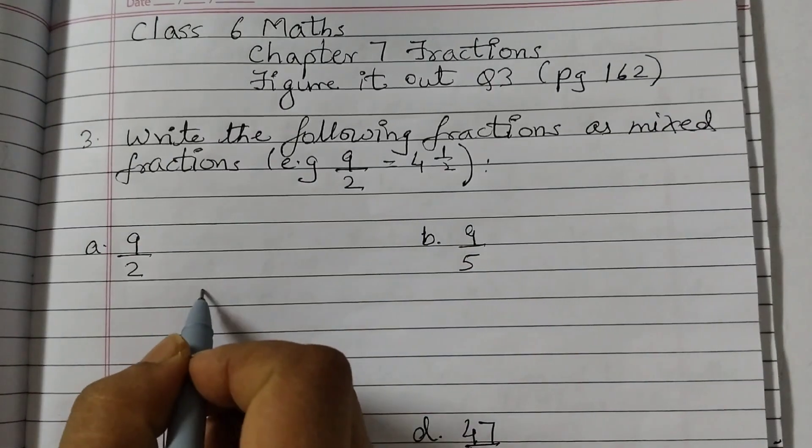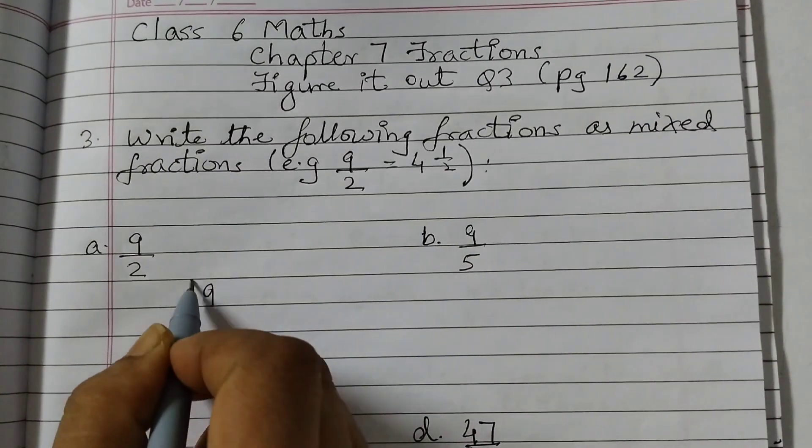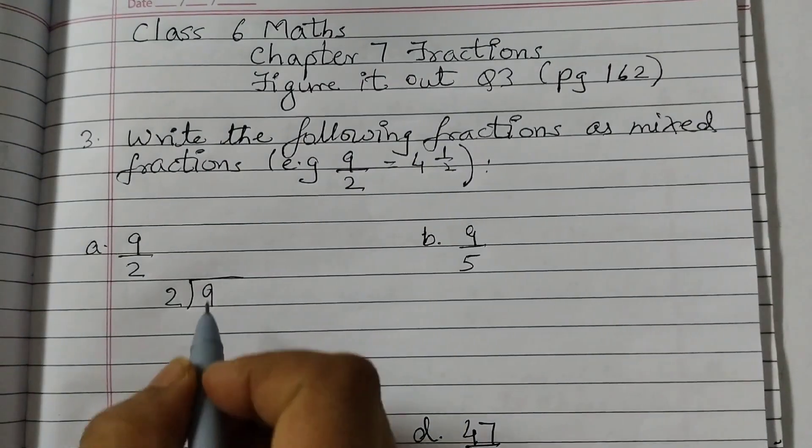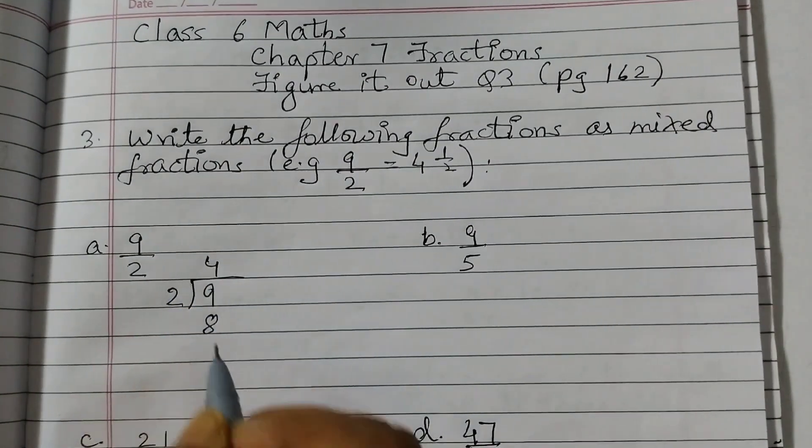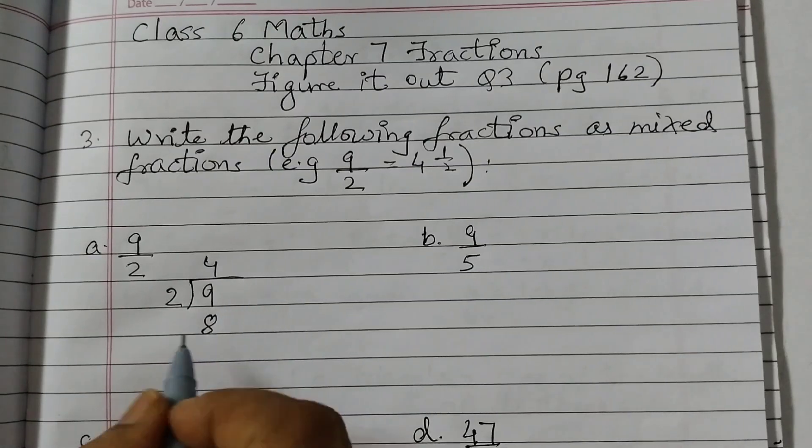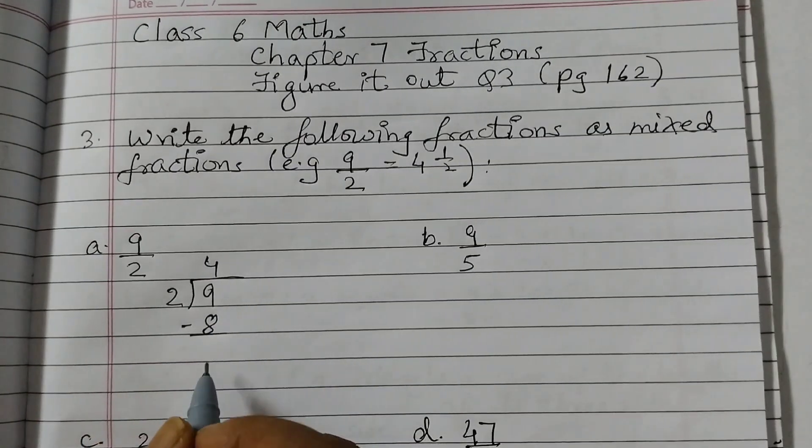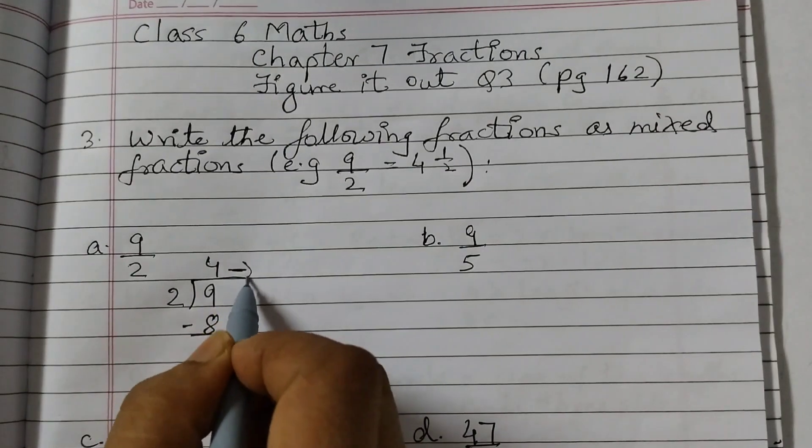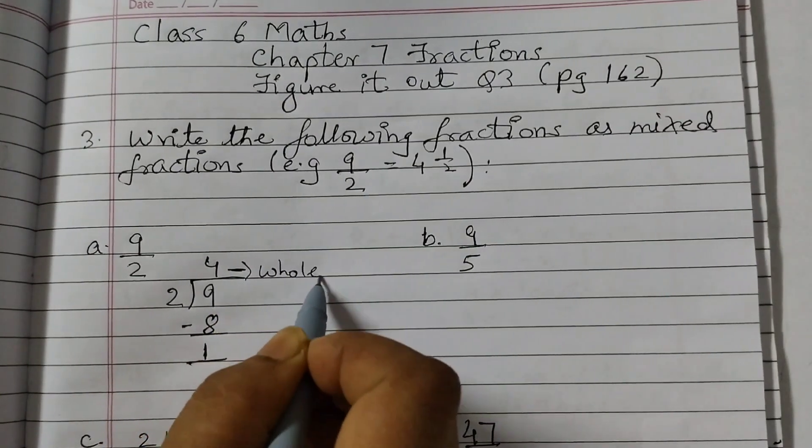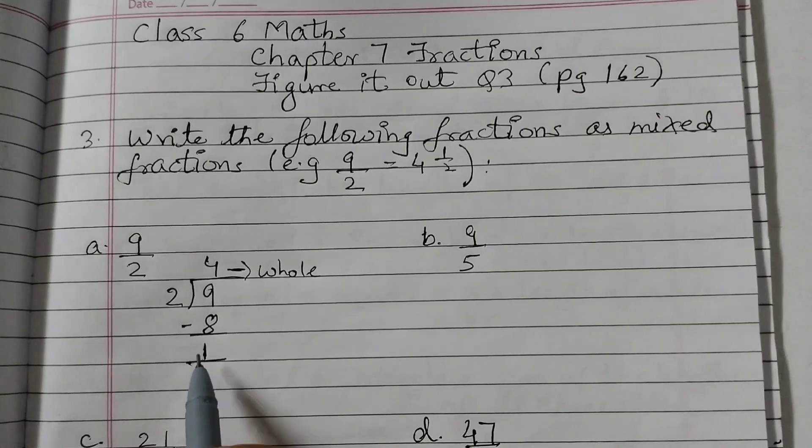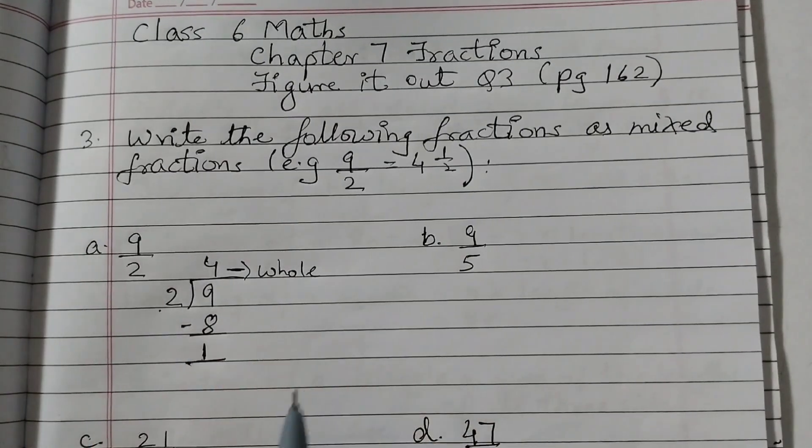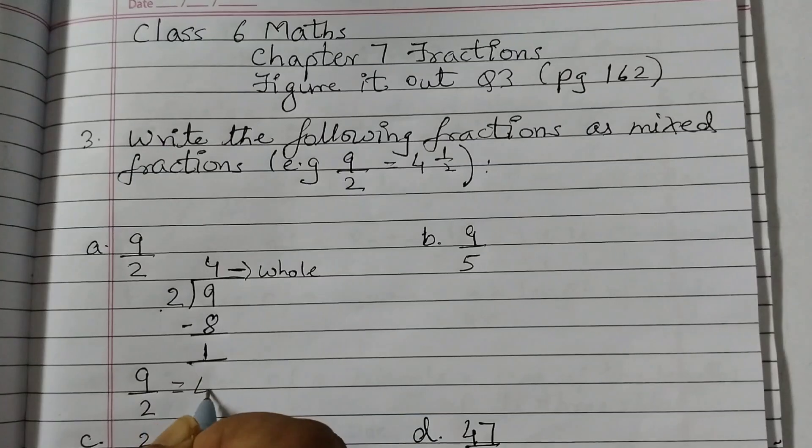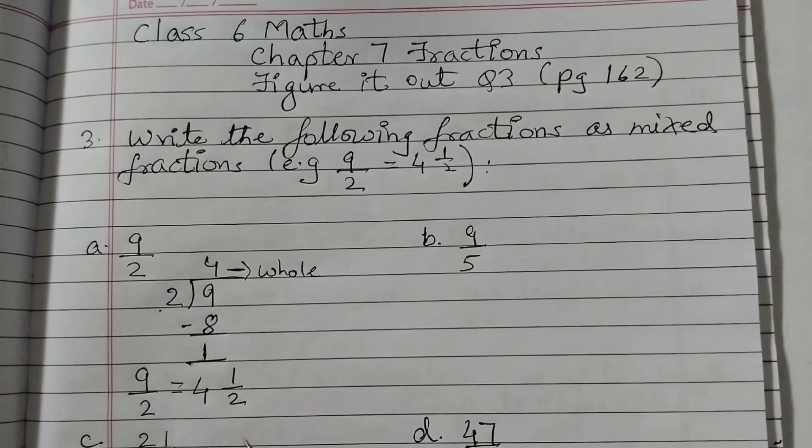How do we get this? You take 9 and 2 outside and divide. You will divide this, so 2 fours are 8, 2 into 4 is 8. Subtract 9 minus 8 is 1. So this part is your whole part, and then 1 upon 2. So we can write that 9 upon 2 is equal to 4 whole and 1 half.